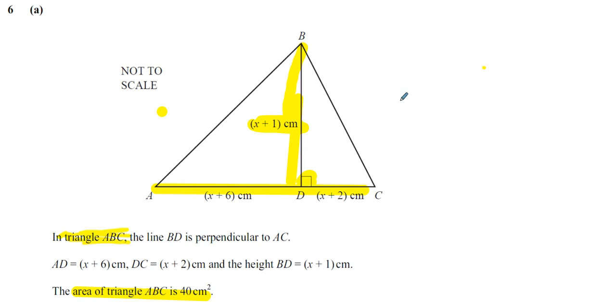We know that the area of a triangle is given by a half times the base times the height. The base is x plus 6 plus x plus 2, so that's 2x plus 8. So a half times 2x plus 8 times the height, which is x plus 1.